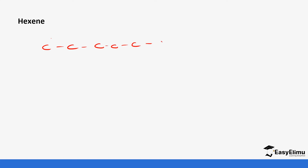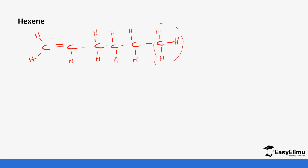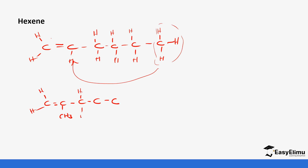Hexene has six carbons with a double bond, and we place the hydrogens. First we move the CH3 and place it at the first available position, so the chain becomes five carbons with the CH3 here and the double bond here. Place the hydrogens and don't forget to count.